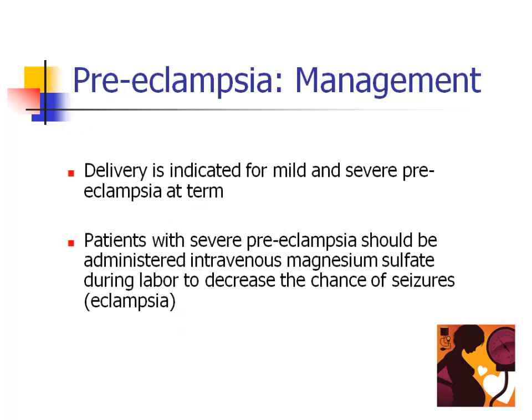The management of pre-eclampsia at term is delivery. Women with severe pre-eclampsia are at a higher risk for the development of seizures known as eclampsia. These women should be administered intravenous magnesium sulfate during labor for seizure prophylaxis. Most clinicians do not give magnesium sulfate to women with mild pre-eclampsia.